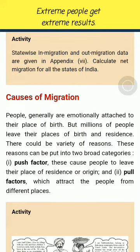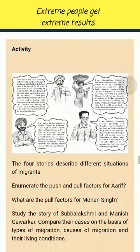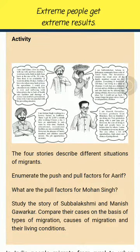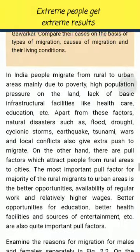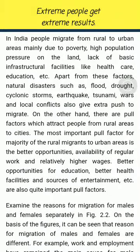In India, people migrate from rural to urban areas mainly due to poverty, high population pressure on the land, and lack of basic infrastructural facilities like healthcare and education. Apart from these, natural disasters such as floods, drought, cyclonic storms, earthquakes and tsunamis, as well as wars and local conflicts, also give extra push to migrate.